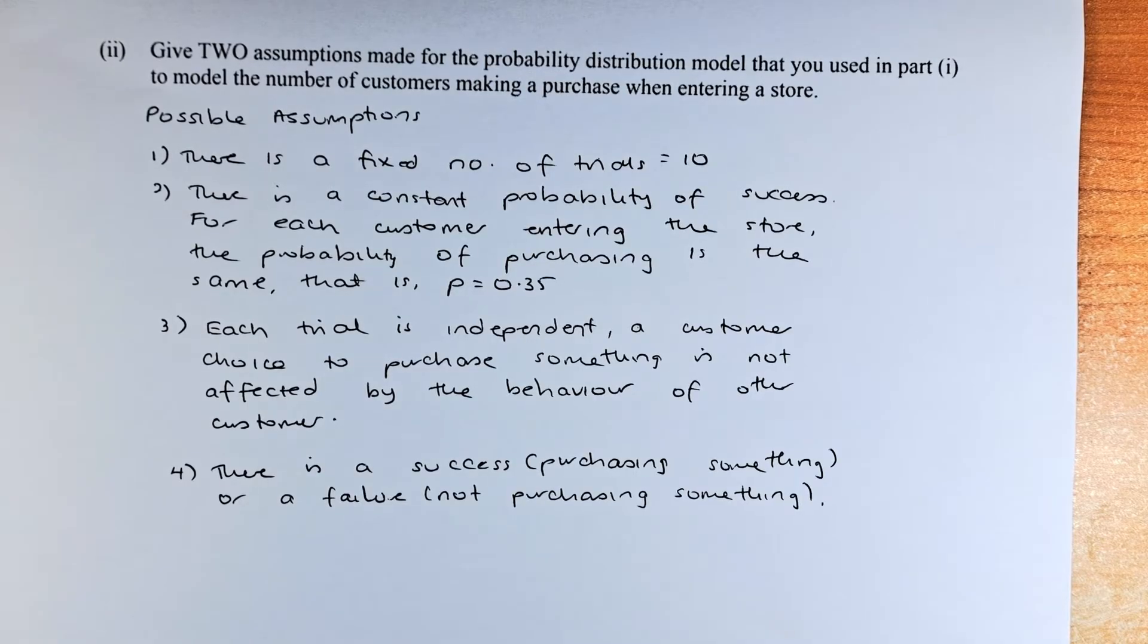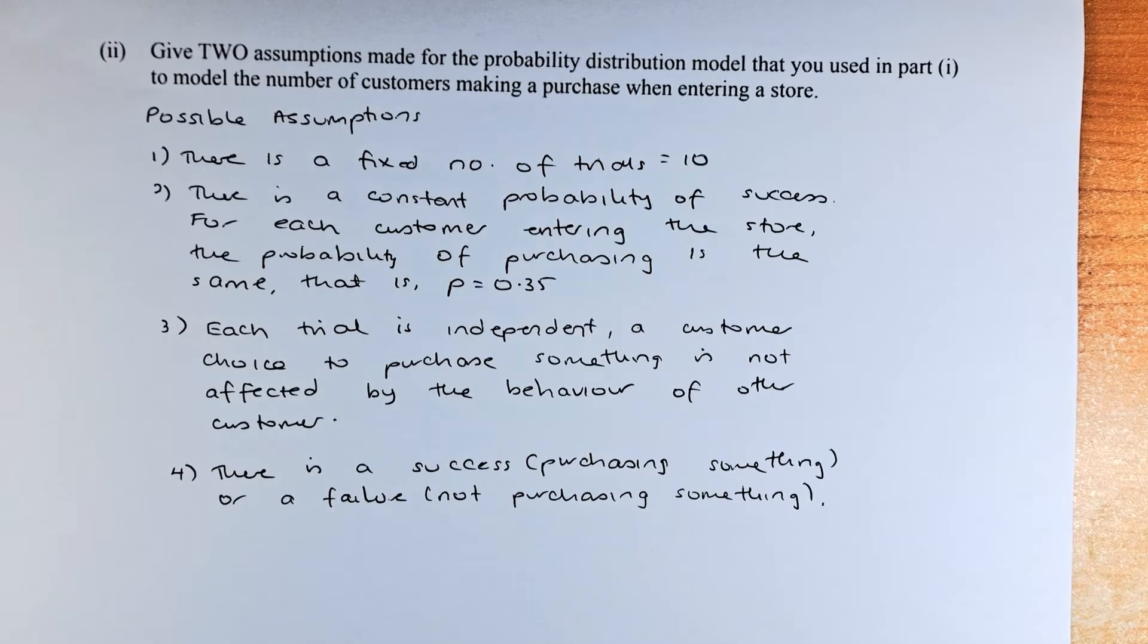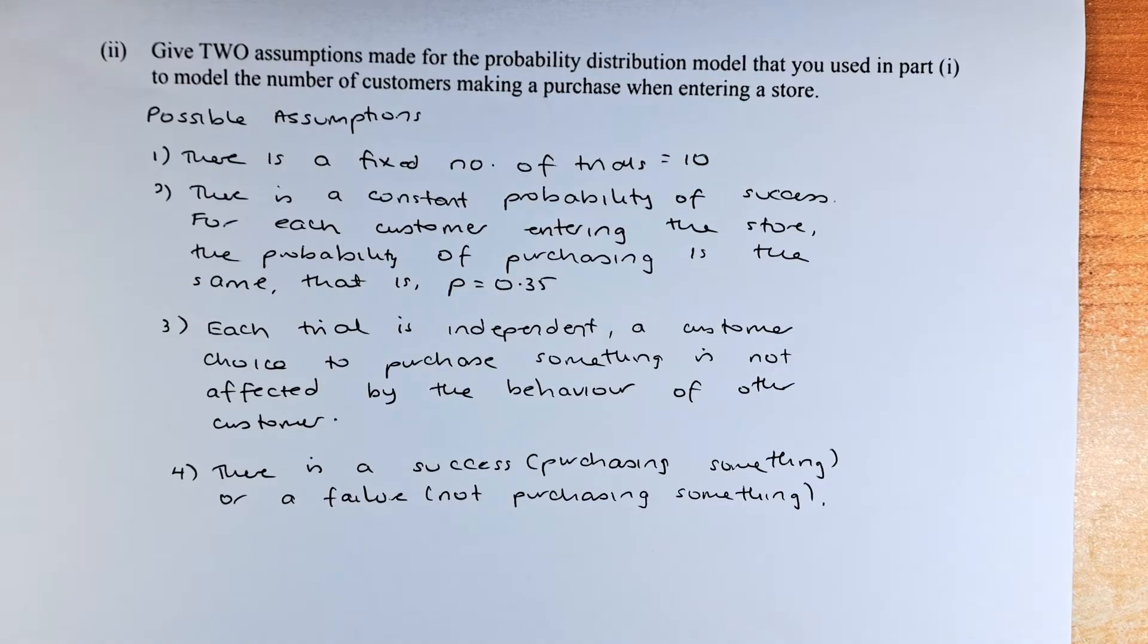Give 2 assumptions for making the probability distribution model that you used in part 1 to model the number of customers making a purchase when entering the store. We know that there are 4 possible assumptions. You need only 2.